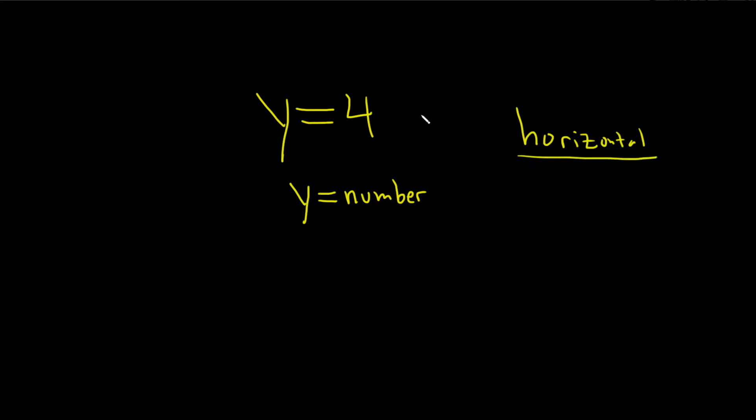So the graph of this line is a horizontal one. To do the graph, all we have to do is draw the y-axis, draw the x-axis, and go ahead and label them. So this is x and this is y.